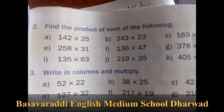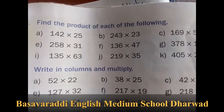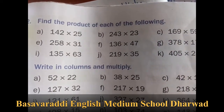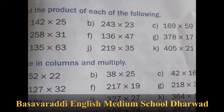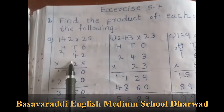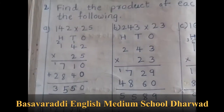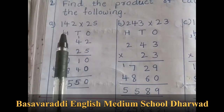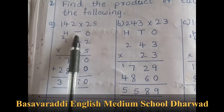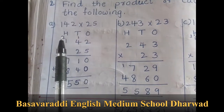Now we will move on. That is section 5, find the product of each of the following. Next: 142 into 25.